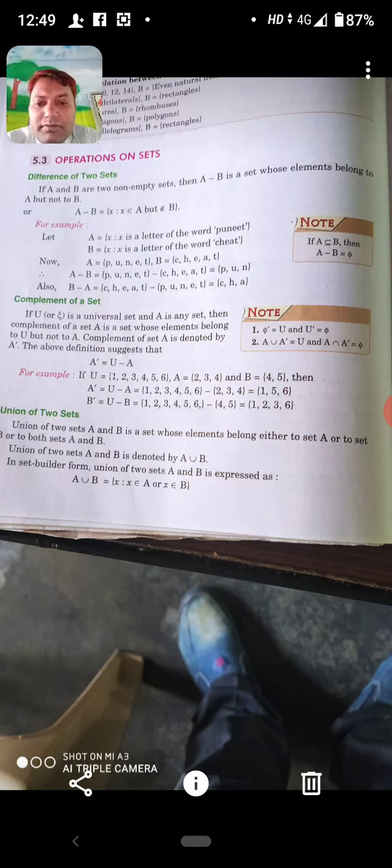For example, U equals 1, 2, 3, 4, 5, 6. A equals 2, 3, 4. A complement is U minus A. So U may say A ka sarhi elements sata dhenge, 2, 3, 4. To aapka bache ga 1, 5, 6 which are not present in set A. So A complement is 1, 5, 6.